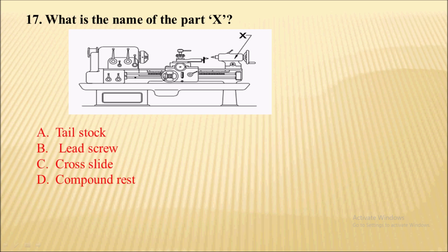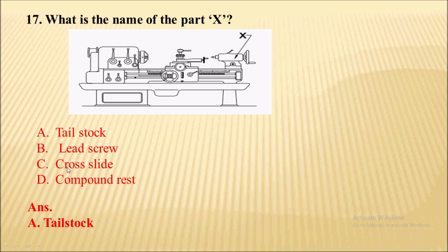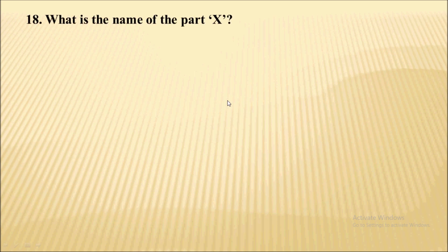What is the name of part X? In the image you can see part X — the name of that part is the tailstock. Correct option is A.